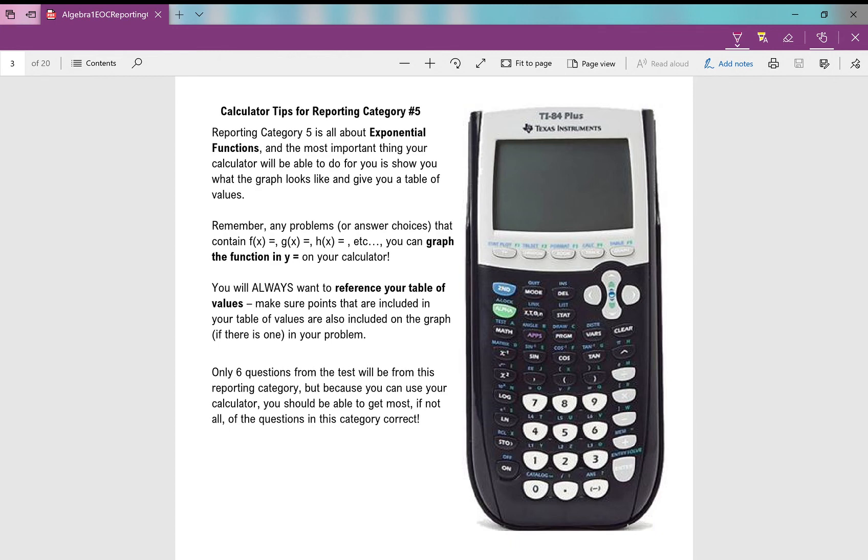Welcome and let's get started on your review for reporting category number five for your Algebra 1 EOC. When we look at the calculator tips for reporting category number five, there aren't really any special things that your calculator can do for you.